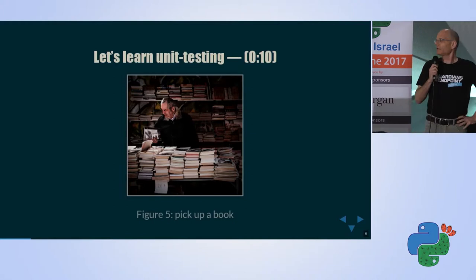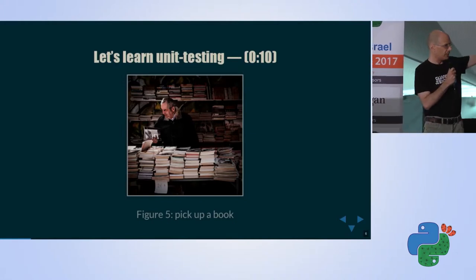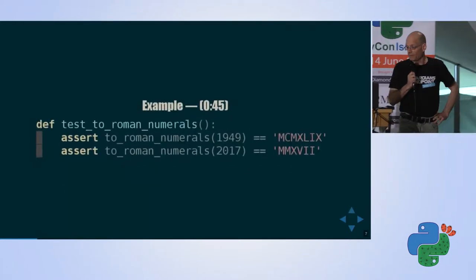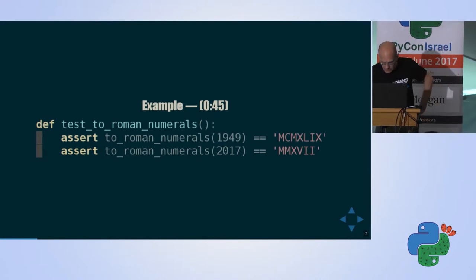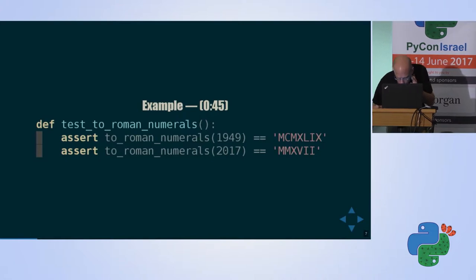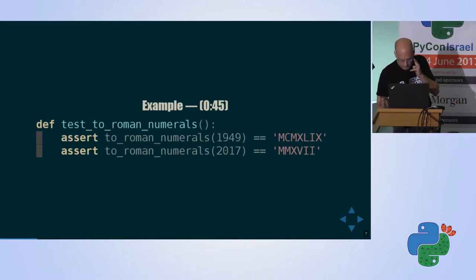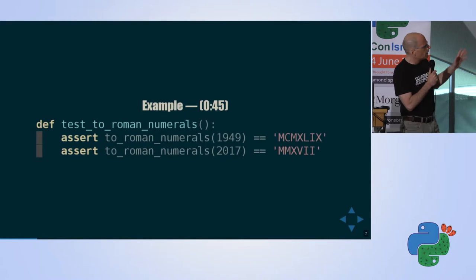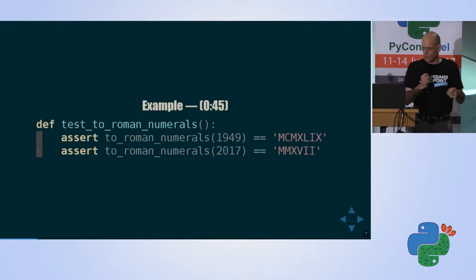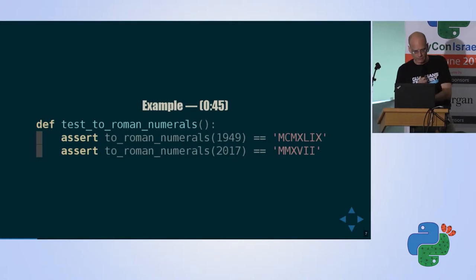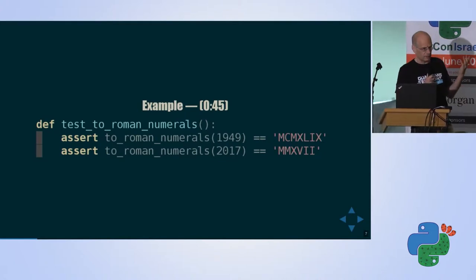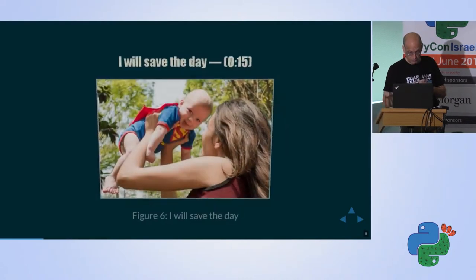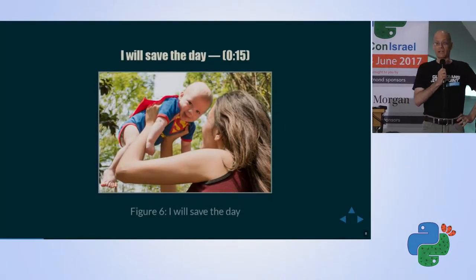I want to learn me some unit testing. How do I do that? I pick a book and I look at the examples. We have a function named 'two Roman numerals'. It gets an integer, it returns a string, and all I really have to do is put some functions with some values, see what values they are returning, put an assert in front of them, put it in a test function, and that is it. That was easy. I can do it. I can fix everything.